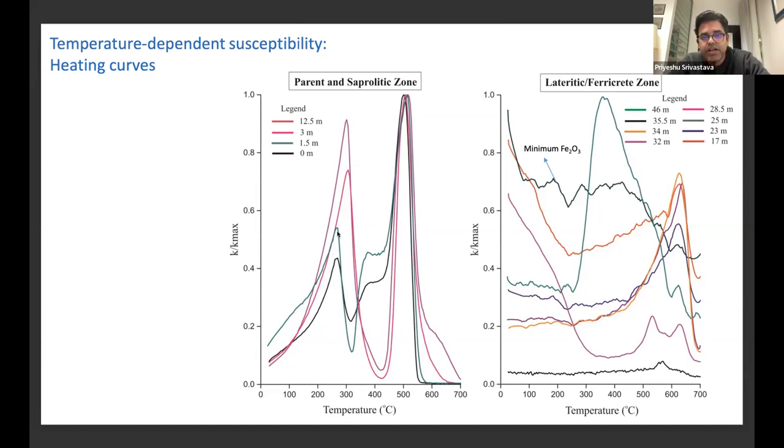What we see there is a change in the peak as we progress towards the top or towards the more alteration part. We can see there is a shift in the peak temperature as well. While we can see in the laterite and ferricrete, it's a very distinguished feature. For example, there are the samples where we have almost no hematite. We can see very weak signatures, whereas the samples where we have very high hematite, we can see very strong peak around 680 or 690 degrees Celsius, the Néel temperature of hematite.